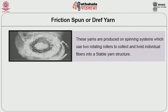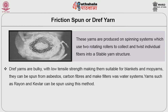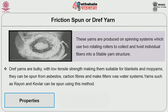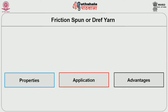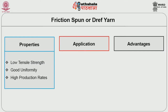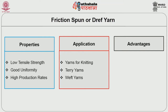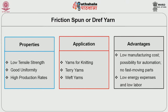The next short staple spun yarn is friction spun yarn, also called DREF yarn. These yarns are produced on a spinning system which uses two rotating rollers to collect and twist individual fibers into a staple yarn structure. Friction or DREF spinning is suitable for spinning coarse counts of yarns and technical core-wrapped yarns. DREF yarns are normally bulky with low tensile strength, making them suitable for blanket and mopped yarns. They can be spun from asbestos, carbon fibers, and used to make filters for water systems. Yarns such as rayon and Kevlar can also be spun using this method. General properties include low tensile strength, good uniformity, and high production rates. It is applied for knitting yarns, terry yarns, and weft yarns. Main advantages are low manufacturing cost, possibility for more automation, low energy expenses, and low labor cost.